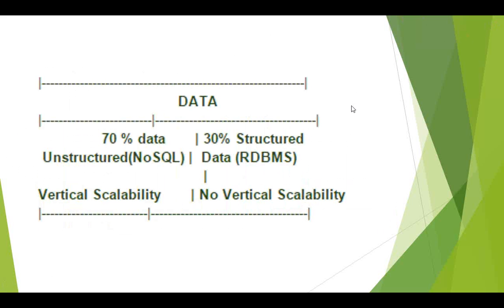Someone mentioned the 3 Vs — Volume, Velocity, and Variety. Yes, we will see those right now. Based on the type and structure of data, we have a comparison between the RDBMS and MapReduce, that is Hadoop. First point of comparison is data size — in RDBMS we can store data only up to gigabytes, but moving towards Hadoop we can store petabytes and zettabytes.